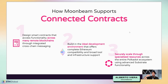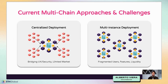Third, scale through specialized resources within Polkadot — projects can tap into specific parachains, like Interlay for trustless BTC. Currently we have two multi-chain approaches with challenges: centralized deployments where everything happens on one blockchain and users must bridge assets in, which creates bridging UX and security concerns and a limited market. On the other hand, multi-instance deployments like SushiSwap deploy the same code to multiple blockchains, which is just fragmented deployments rather than true multi-chain.